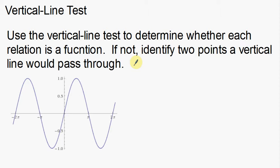Looking at this graph down here — for those of us who don't know, this is a sine graph. Depending on your level of mathematics, you might not know what a sine graph is, but that's okay. This is a good example for our vertical line test. Notice that the graph just goes up and down, and up and down, crossing over the x-axis, going up the same distance that it goes down.